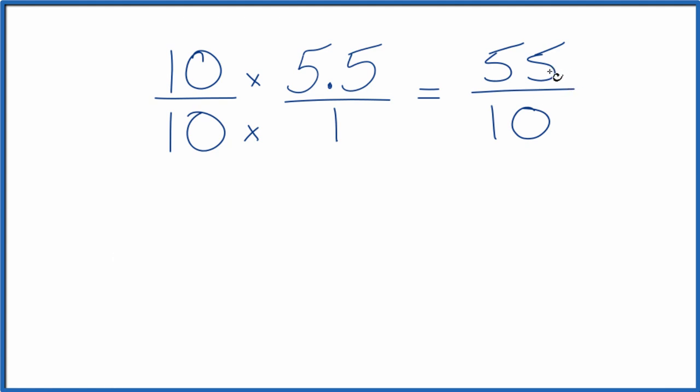5 goes into 55 eleven times, and 5 goes into 10 two times. So we end up with 11 over 2 as a fraction for the number 5.5.